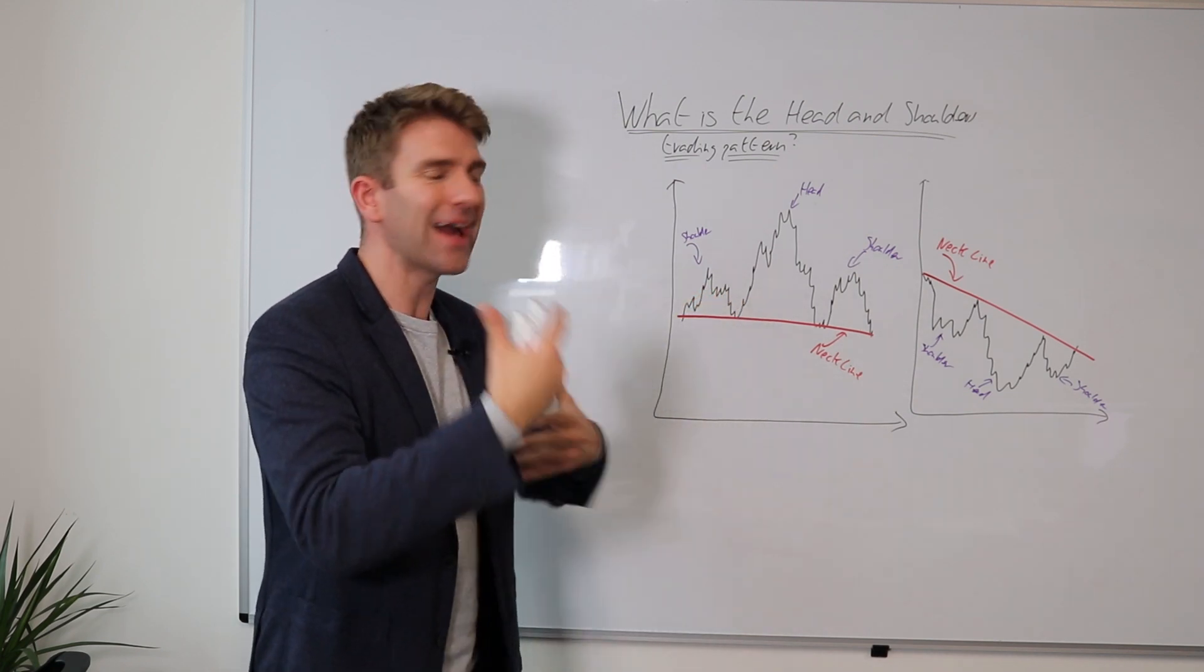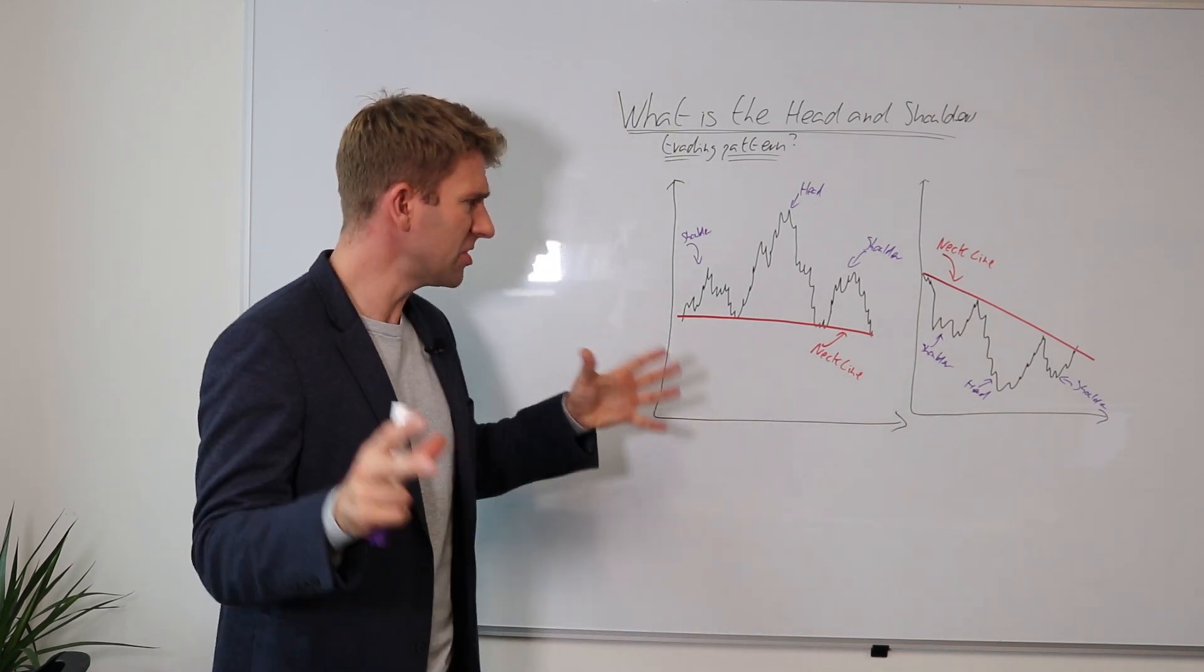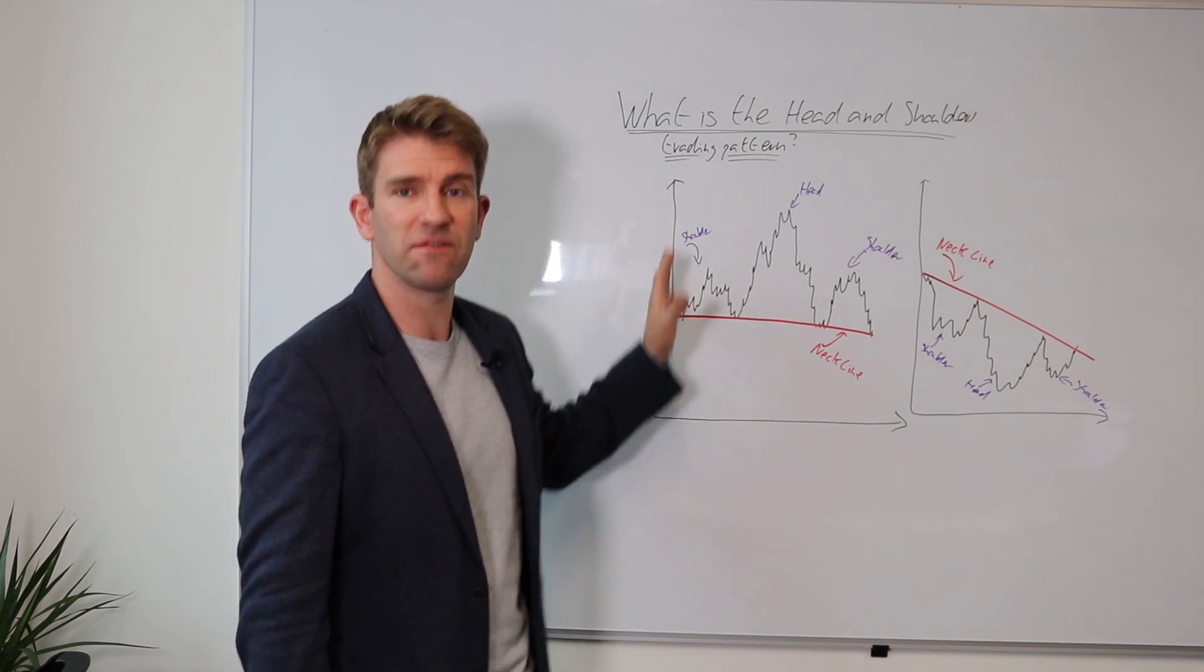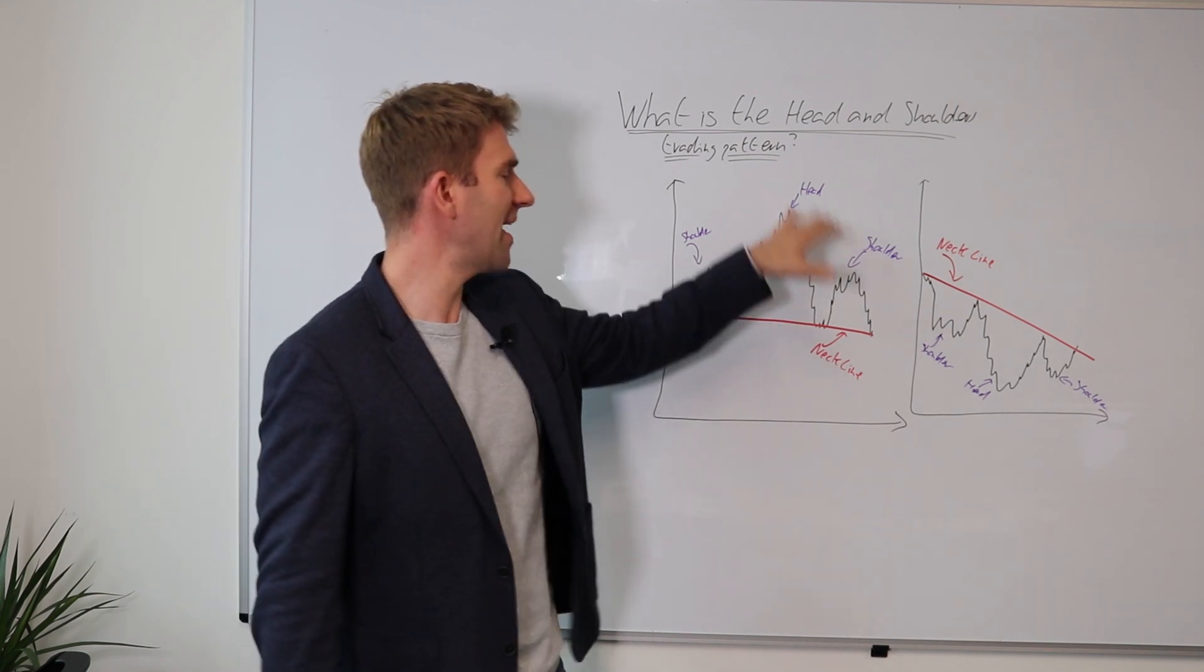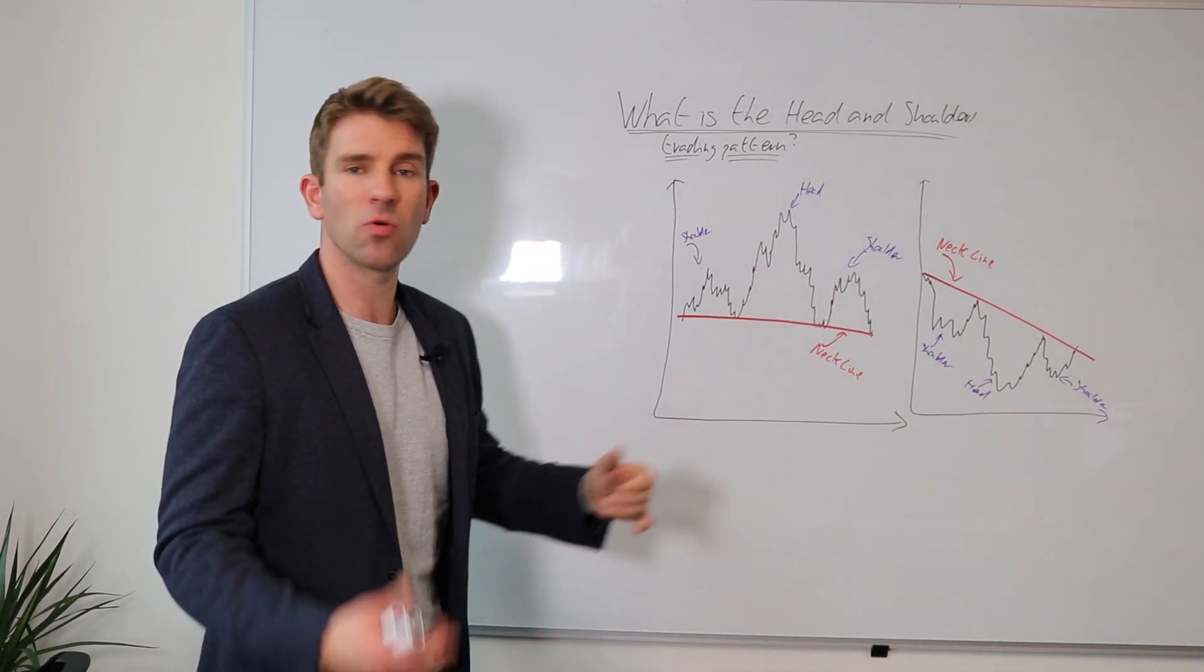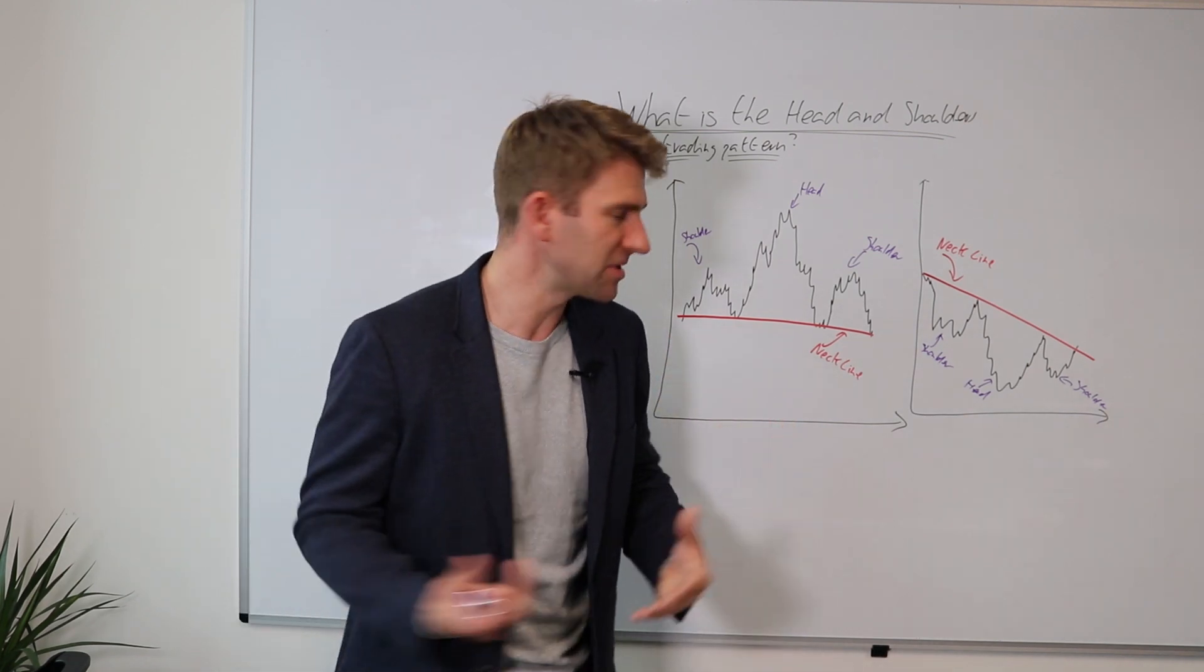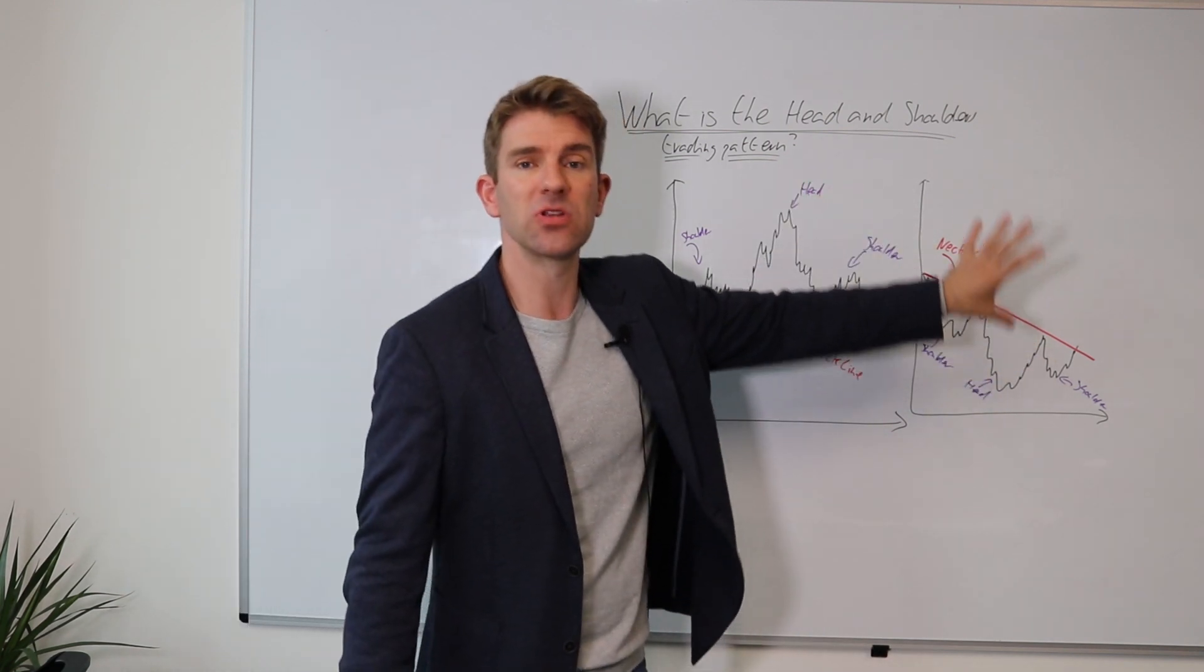So let's run through it now and let me unpack a little bit how I perceive the head and shoulders. It's called head and shoulders because we've got two shoulders and a head. We have the first shoulder put in, which is the first swing high, then a second swing high called the head, and then a third swing high called the shoulder. That's the textbook definition for it.